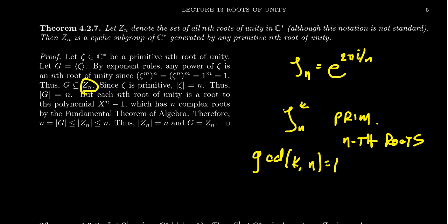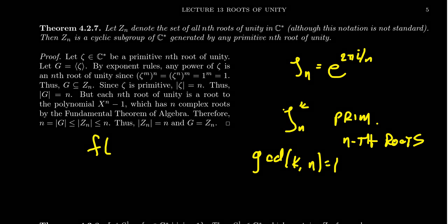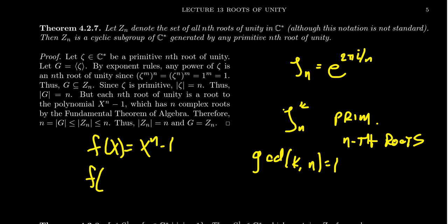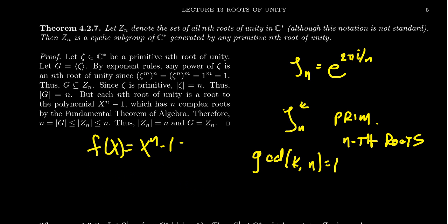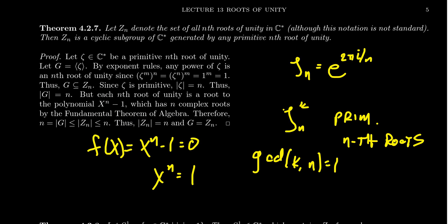Zn is all of the nth roots of unity total. Every nth root of unity is a root of the polynomial f(x) = x to the n minus 1. Notice that f(zeta) equals zeta to the n minus 1, which is 1 minus 1, which is 0. So the roots of x to the n minus 1 are exactly the nth roots of unity — we're looking for things where x to the n equals 1. By the fundamental theorem of algebra, the number of roots of this polynomial is exactly its degree counting multiplicities, so there are at most n nth roots of unity.